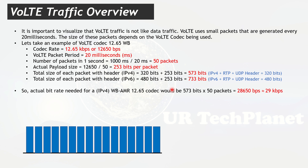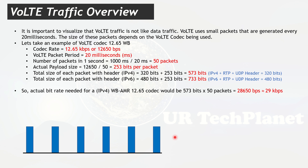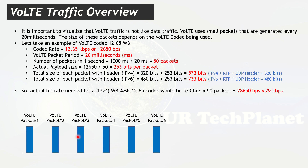First, we need to understand the difference between VoLTE and data traffic. For data — like YouTube or Netflix — traffic is more burst-like and continuous. For VoLTE, packets arrive periodically: one packet, then the next after some time, and so on. The time difference between VoLTE packets is usually around 20 milliseconds.